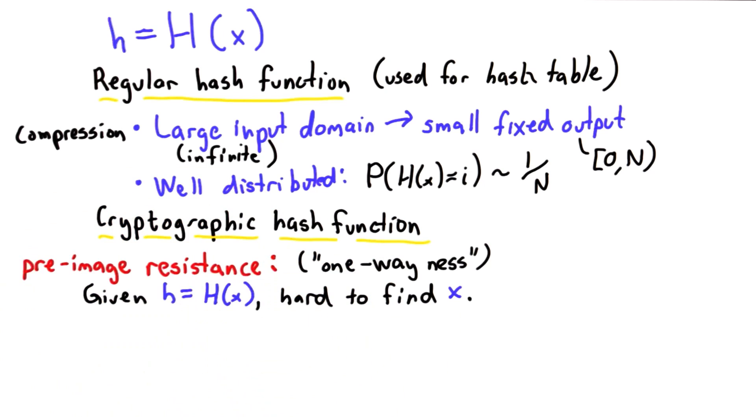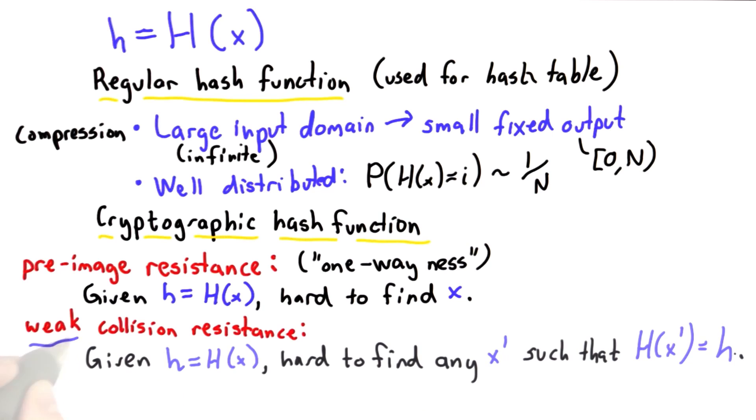The other two properties we need concern collision resistance. The weakest form of this is known as weak collision resistance. What weak collision resistance means is that if we're given some hash value, it's hard to find any input that hashes to the same result. These are sort of similar. This one says it's hard to find the actual value of x that was used. This one says it's hard to find any x prime value that hashes to that value. If we have weak collision resistance, that would imply we have a form of pre-image resistance as well.